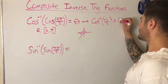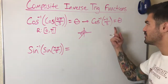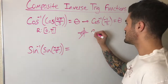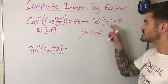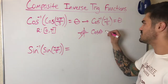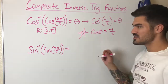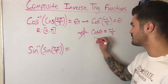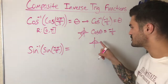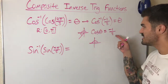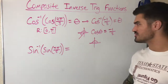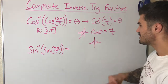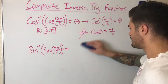So cosine inverse of negative one-half equals theta. I can rewrite this as: cosine of what angle gives me negative one-half? That angle has to be within the range — between zero and π, meaning first or second quadrant. Since we have a negative value, cosine is negative in the second quadrant, so I'm looking in the second quadrant.